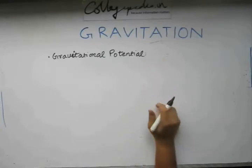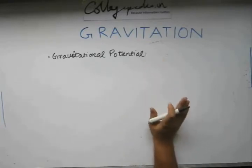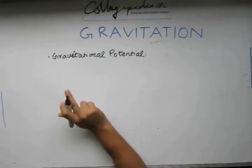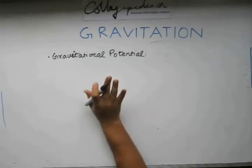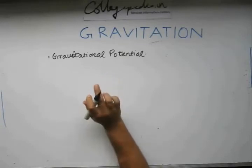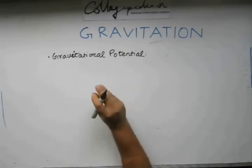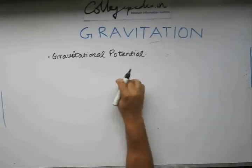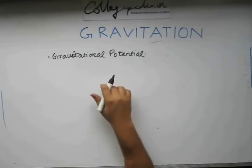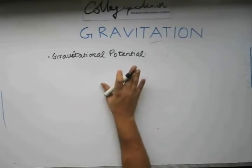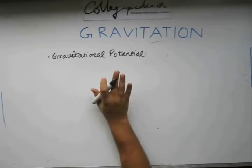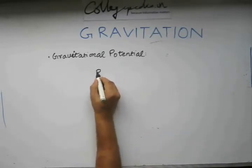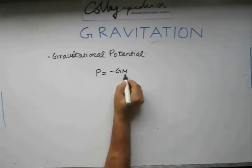Gravitational potential is nothing but the work done in bringing a unit mass from infinity to that point without changing its kinetic energy. Since we were initially considering a mass small m getting brought from infinity to a point in the vicinity of our gravitational field, we are now considering a unit mass being brought from infinity to that point. So gravitational potential, say p, is nothing but minus GM by r.